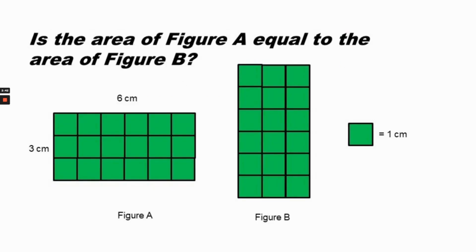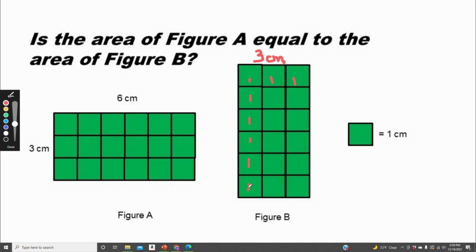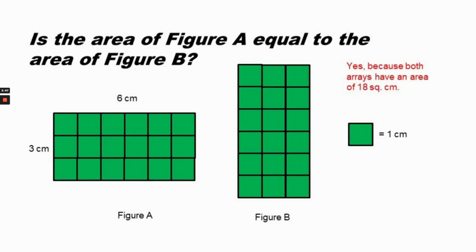Is the area of figure A equal to the area of figure B? The area of figure A is 18 square centimeters because six times three equals eighteen. For figure B, there are three centimeters on one side and six centimeters on the other, so three times six equals eighteen square centimeters. Yes, both figures have an area of eighteen square centimeters.